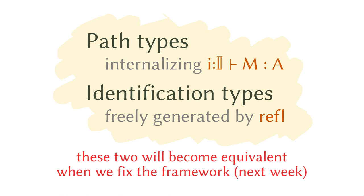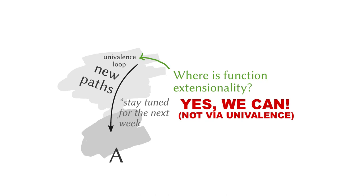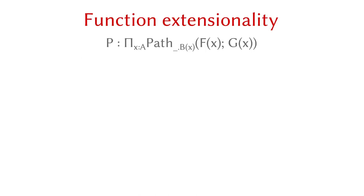So before ending this lecture, I want to show you something cool. If you pay close attention to the pictures I showed you, you might have noticed that there's no function extensionality in the new picture. The reason is we can actually easily prove function extensionality in cubical type theory, and it's not using univalence at all — any cubical type theory will have function extensionality. Here's the proof. Suppose you have P saying that for any point in A, there's a path from f(x) to g(x). So f and g are the two functions, and this says that for any point there's a path between them — they are pointwise equal in some sense.